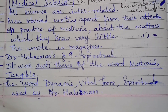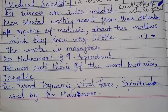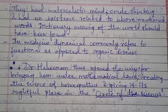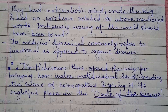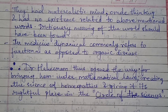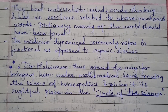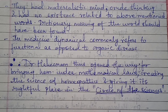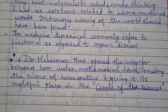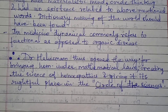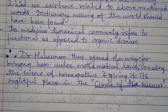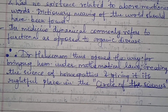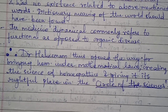The words dynamis, vital force, and spiritual were used by Dr. Hahnemann. Critics had a materialistic mind and crude thinking and could find no existence related to these words — the dictionary meaning should have been consulted. In medicine, dynamically commonly refers to functional as opposed to organic disease. Dr. Hahnemann thus opened the way for bringing homeopathy under mathematical laws, creating the science of homeopathics and giving it its rightful place in the circle of science.